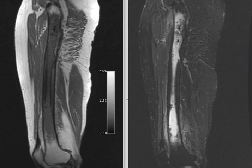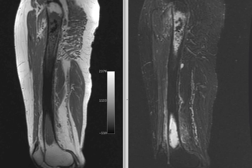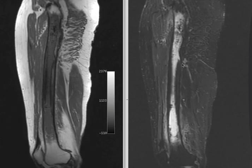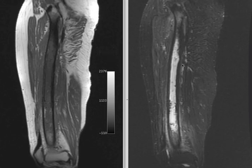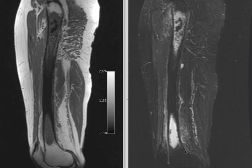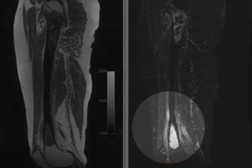This is the heterogeneity that we saw in the tumor, where proximally there are very low signal foci on T1 and on T2 that correspond with the calcifications. As we go further down the femoral shaft, the signal is somewhat more homogeneous, but we can see how extensive the signal is, going all the way down to the distal femoral diaphysis.